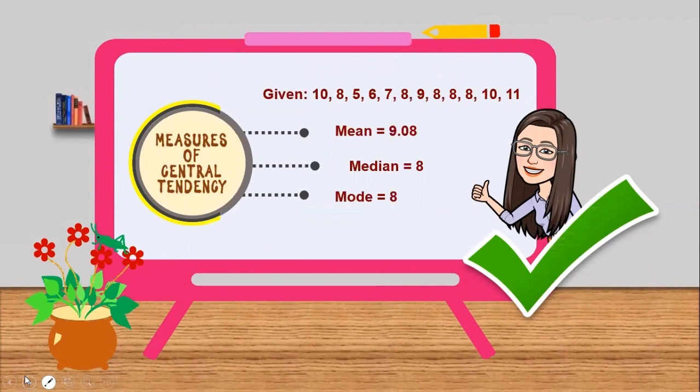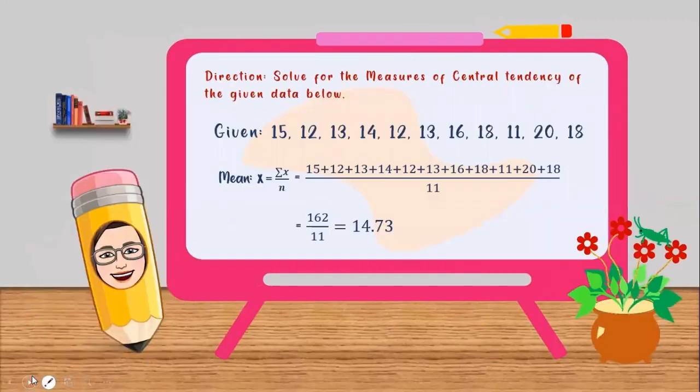This given set of data has a mean value of 9.08, has a median value of 8, and a mode value of 8. Now, let's try this one. Solve for the measure of central tendency of the given set of data.